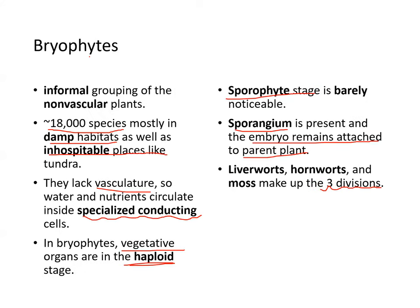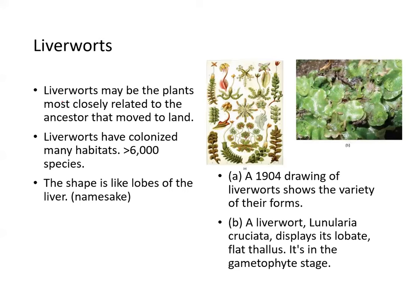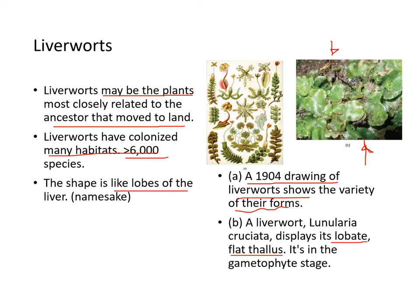Liverworts may be the plants most closely related to the ancestors that moved to land. They are called liverworts because they look like a liver. They have colonized many habitats, with about 6,000 species shaped like lobes of a liver. Here is a 1904 drawing of liverworts showing a variety of their forms, as well as a photograph of liverworts displaying its lobate flat thallus, which is in the gametophyte stage.